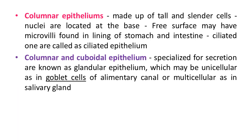Columnar epithelium is made up of tall and slender cells. The nuclei are located at the base region, and the free surface may have microvilli. It is found in the lining of the stomach and intestine. The ciliated type is called ciliated epithelium. Its main function is secretion and absorption.